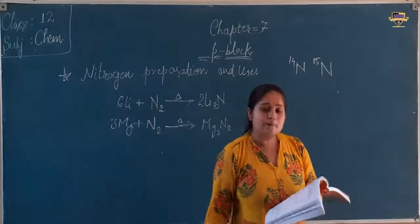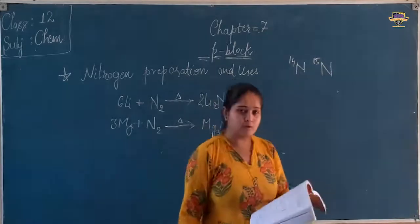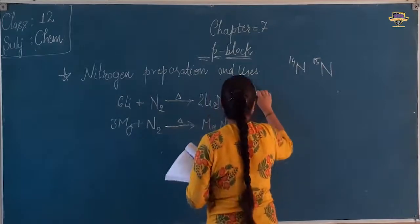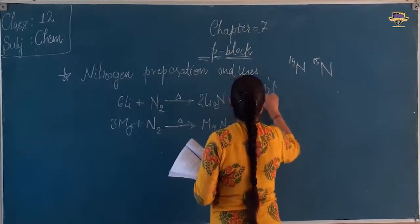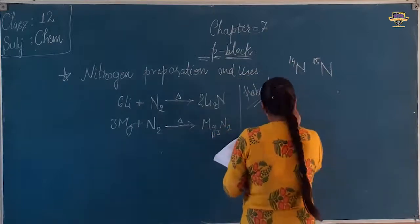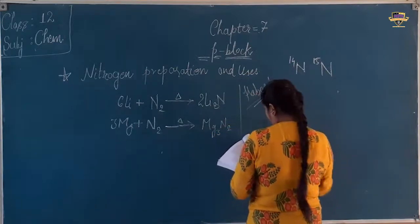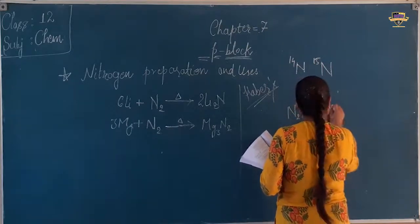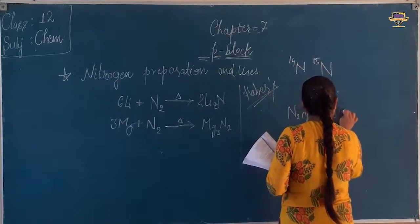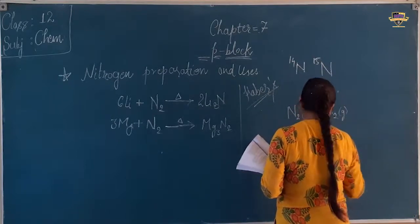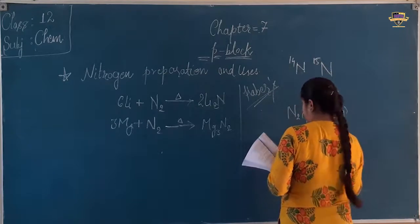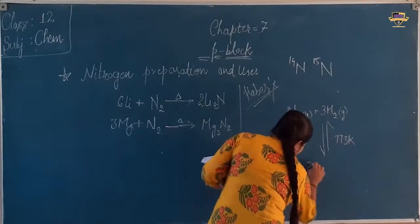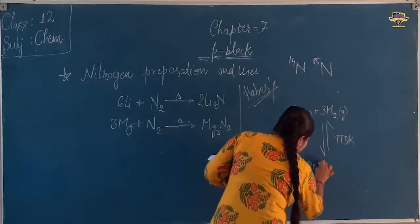So when you have to write this reaction, Haber's process, nitrogen plus 3 molecules of hydrogen in a reversible reaction produces 2 molecules of ammonia, 2NH3. This produces ammonia.